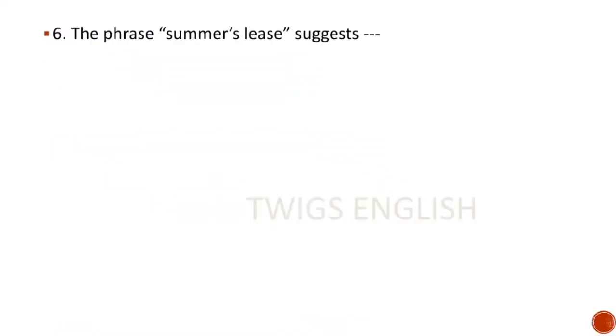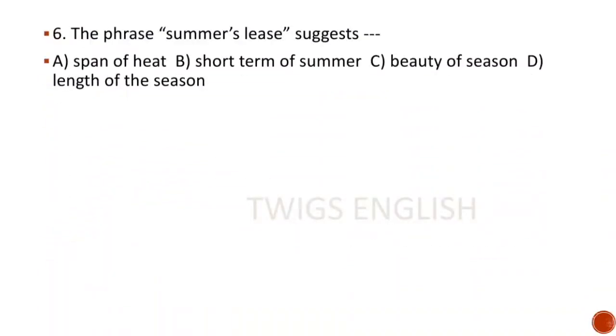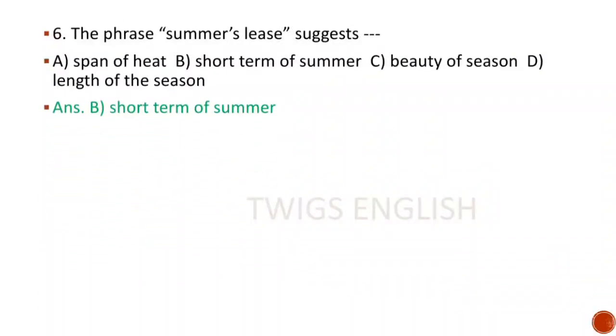Next MCQ: The phrase 'summer's lease' suggests — options are span of heat, short term of summer, beauty of season, length of the season. Here the right answer is option B, short term of summer.